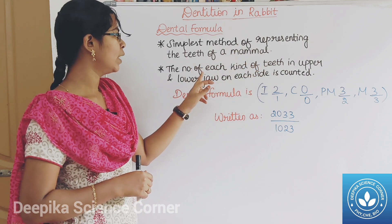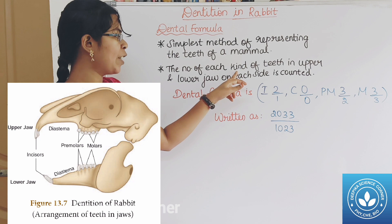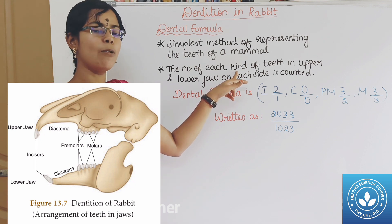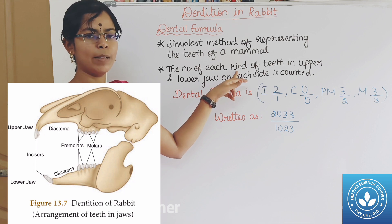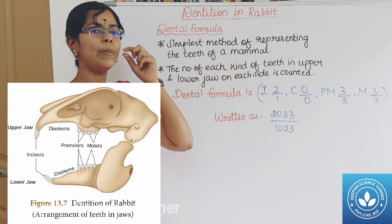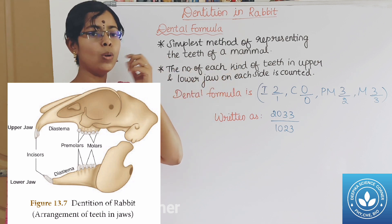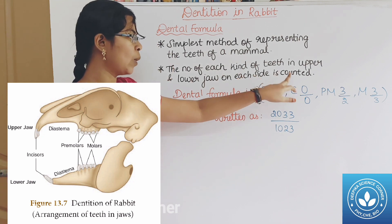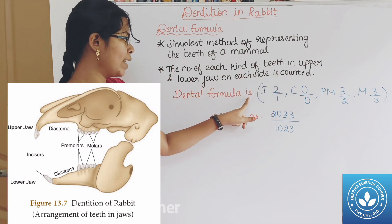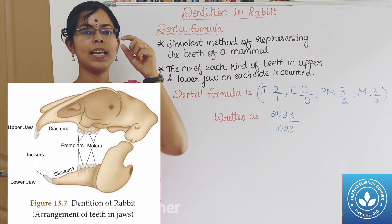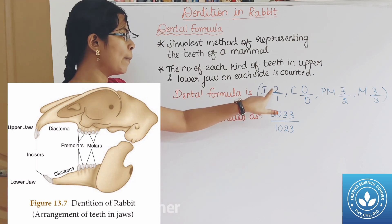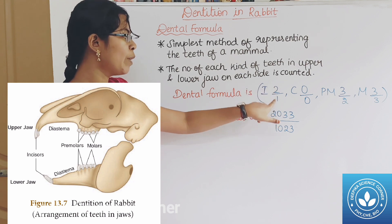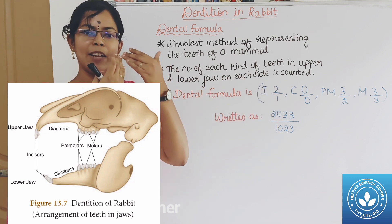The dental formula counts the number of incisors, canines, premolars, and molars on the upper and lower jaw on one side. The formula represents one side only — upper jaw over lower jaw. In premolars, the upper jaw has 3 and the lower jaw has 2.